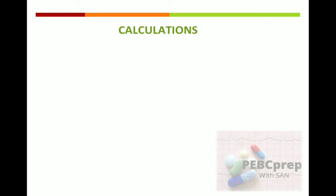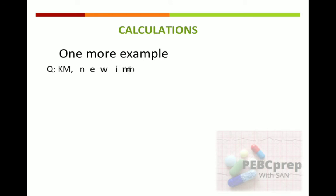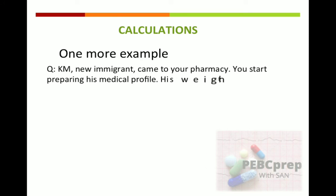If they want to make it even more complicated, here is one more example: KM's weight is 132 pounds and height is 5 feet 6 inches. You need the height in centimeters, so convert the height to centimeters first, then convert pounds to kilograms, and then calculate BSA. This is the hardest example you can face in the exam — they will not go harder than this because you are a pharmacist, not a mathematician.